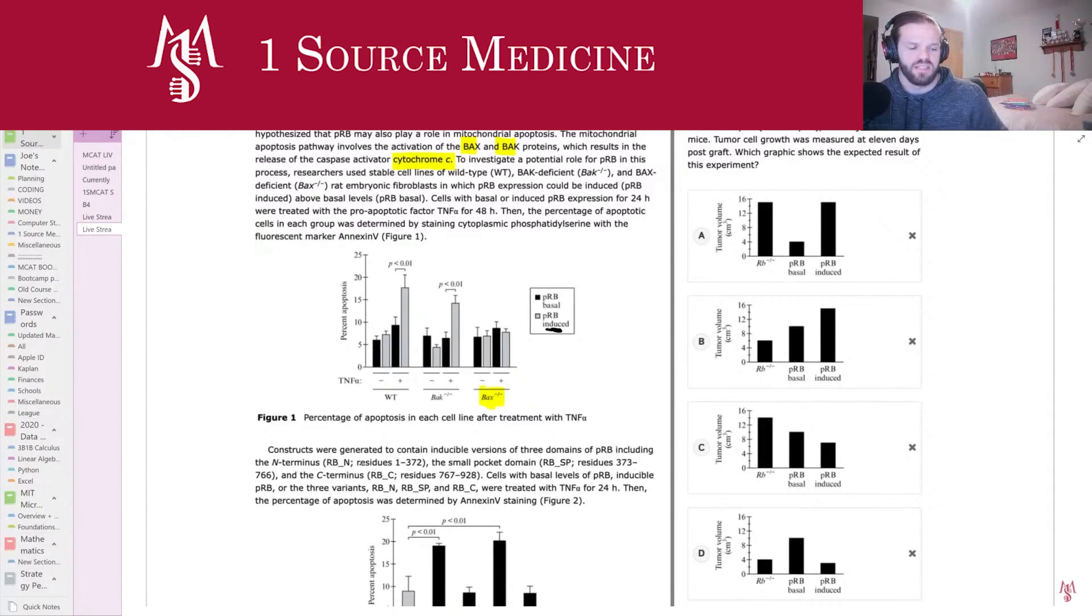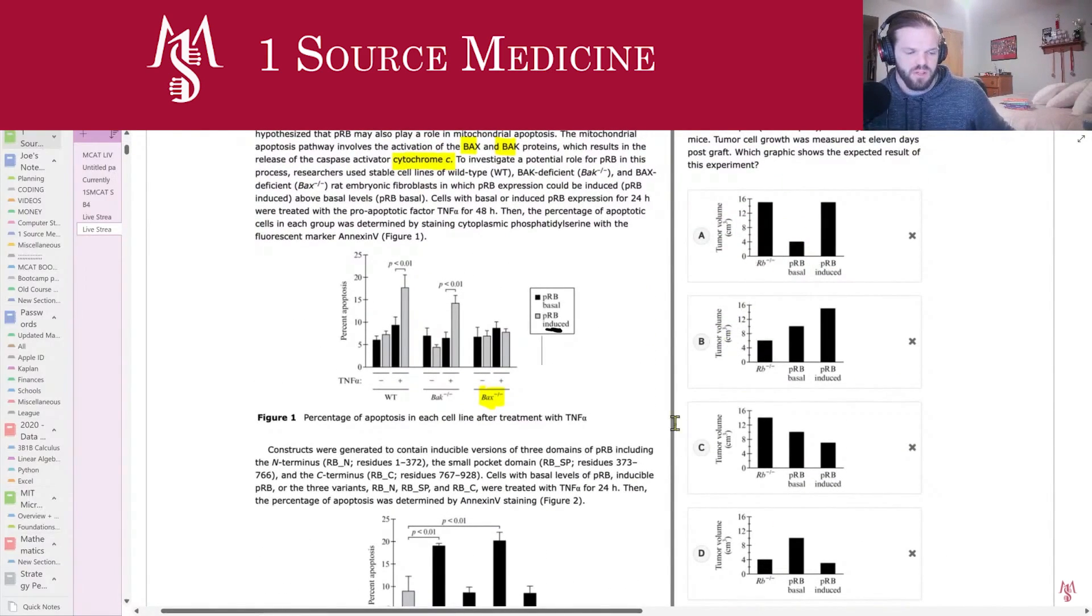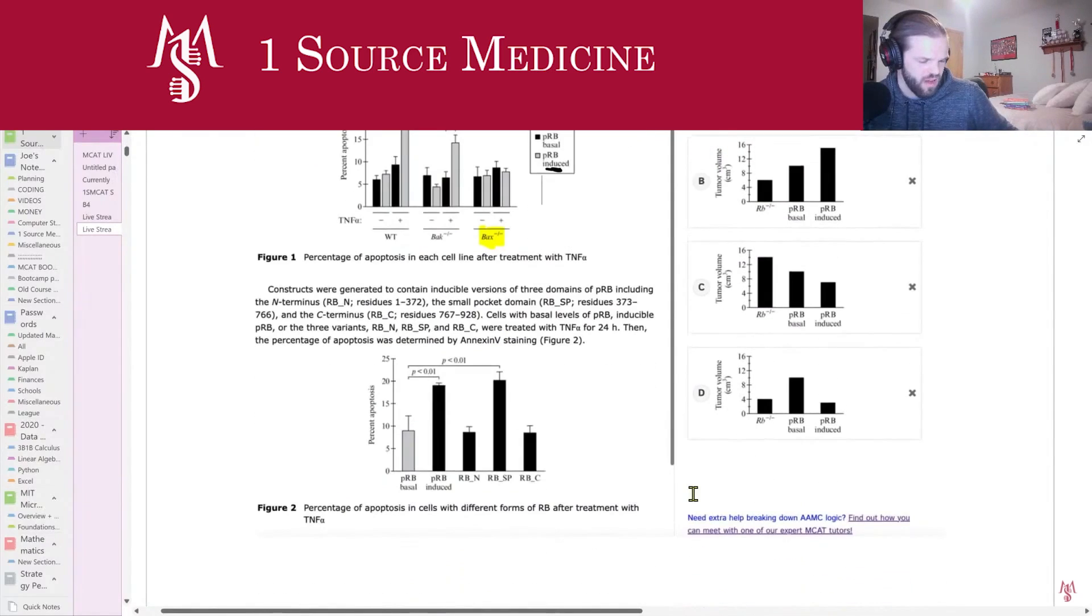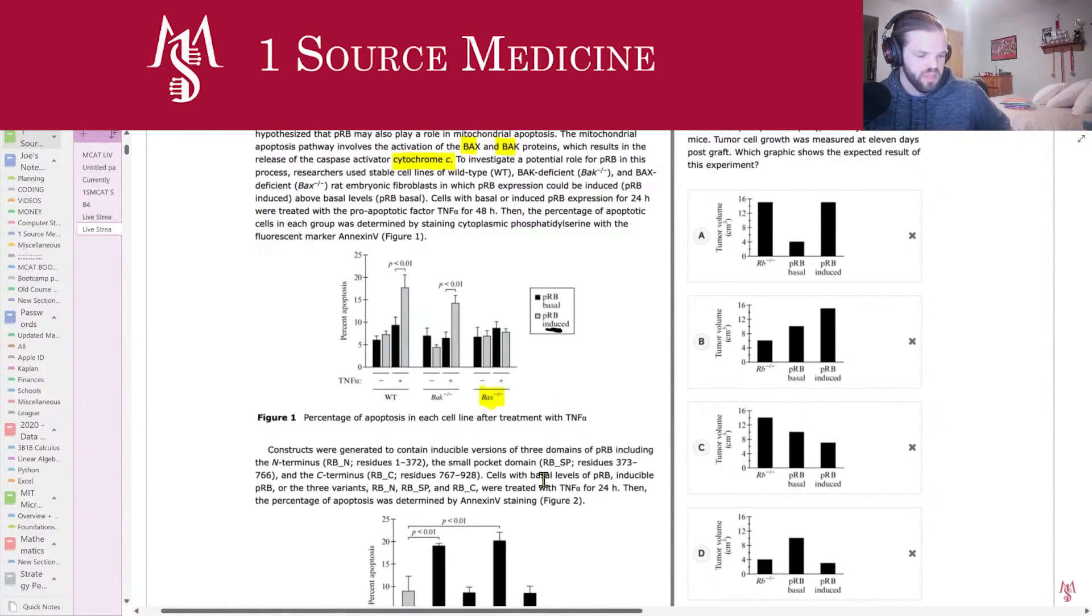So what I'm going to predict here is that the cells that have no PRB present, over here in the answer choice, right, so the PRB knockouts are going to have higher tumor volume, and the cells with PRB induced, meaning high levels of PRB, are going to have the lower tumor volume. So just right off the bat, I would say C is probably right here. Because the cells that don't have PRB are going to basically get cancer, right, and the cells that do have PRB are going to be inhibited from getting cancer. So I'm going to say C is correct in this.